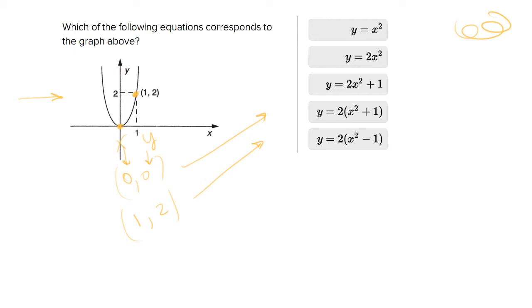So for example, if I just try the (0,0) approach, that gets rid of the fifth answer choice, the fourth answer choice, the third answer choice, and we're really just left with the first two.